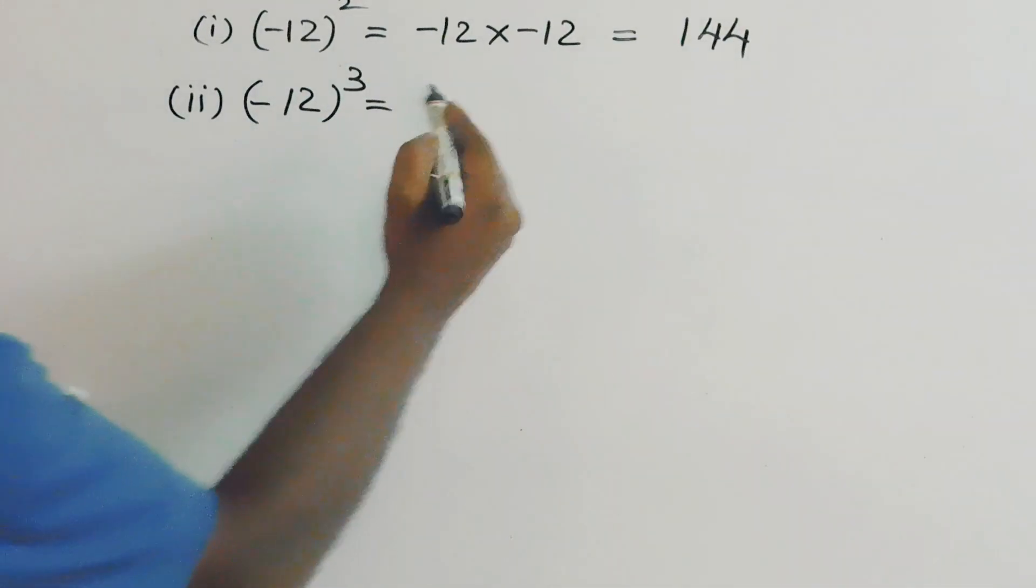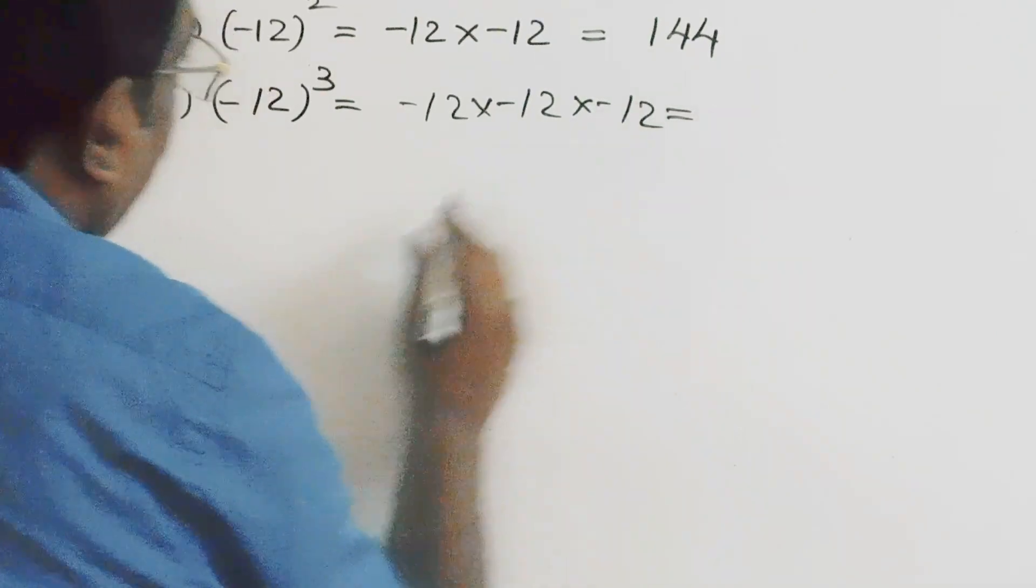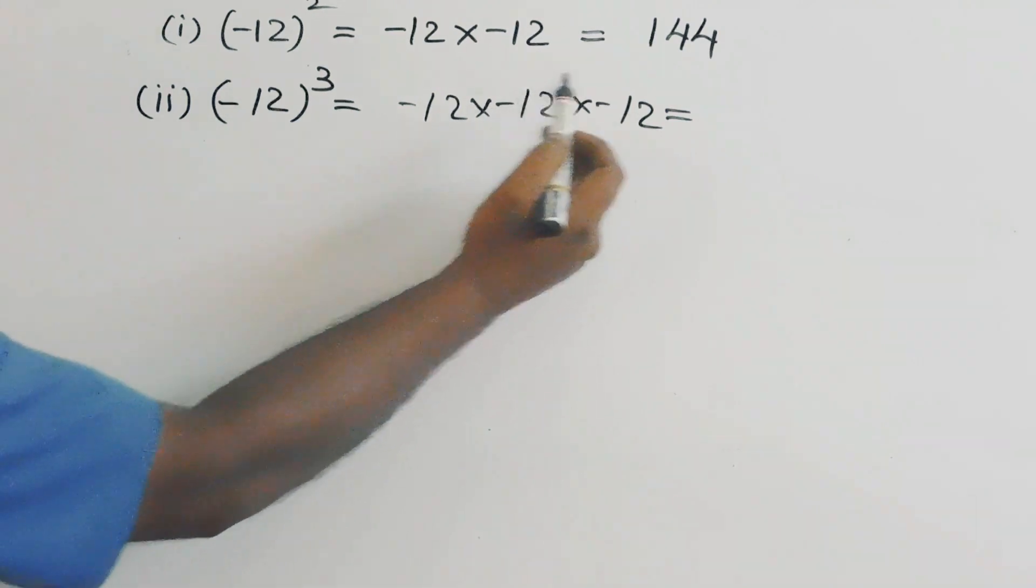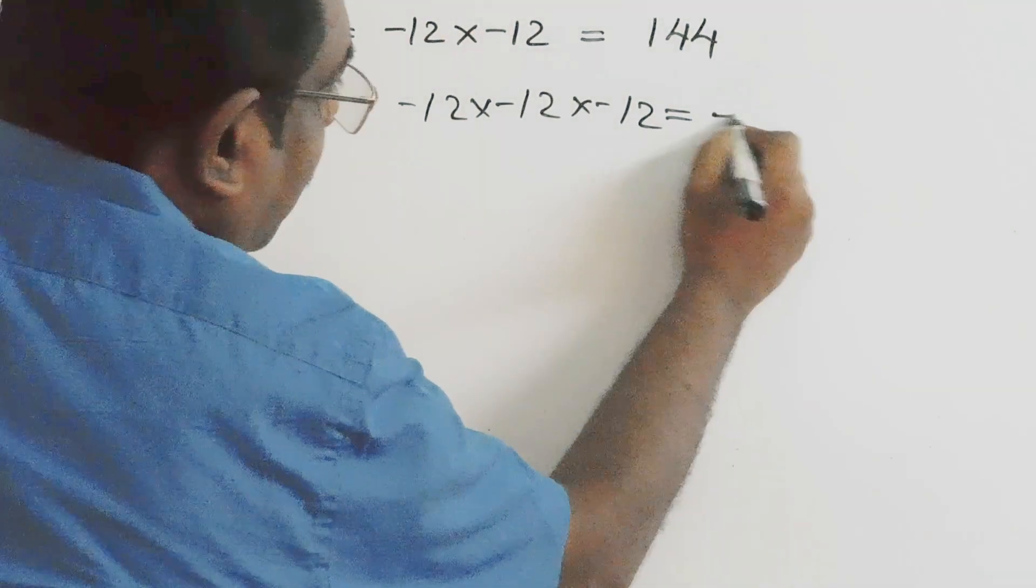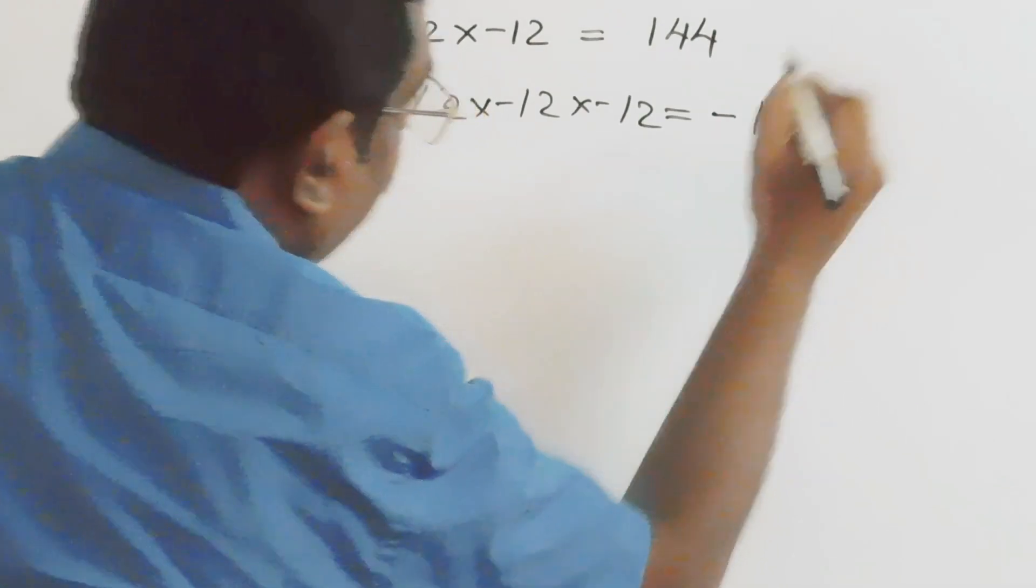Here, minus into minus, we got plus, again, plus into minus becomes minus. So, the answer is minus 1728.